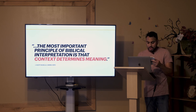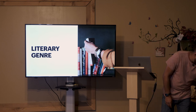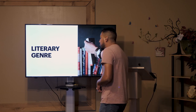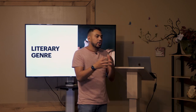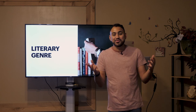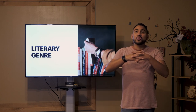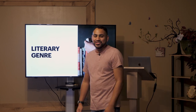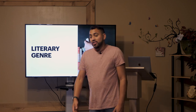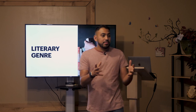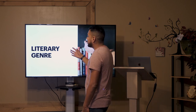One of the first things we need to do in understanding context is understanding literary genre. What's a genre? In films, you have action, romance, comedies — all these different things. It's the same with literature. Literature has different types of genre. Here's the really neat thing about the Bible: it has different types of genre in it — books of wisdom, books of poetry, letters, and all these different types.